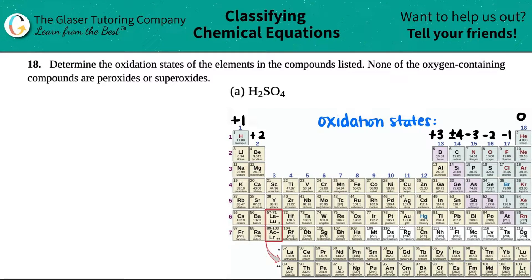Number 18, determine the oxidation states of the elements in the compounds listed, and none of the oxygen-containing compounds are peroxides or superoxides.